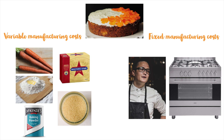On the other hand, if Candy would like to calculate the cost of the same 1 kilo carrot cake under absorption costing, then she will take into account both the variable manufacturing costs and the fixed manufacturing costs. So in this case, the salary of the chef and also the lease rental on ovens will also be included as part of the cost of the carrot cake alongside any other fixed manufacturing costs.